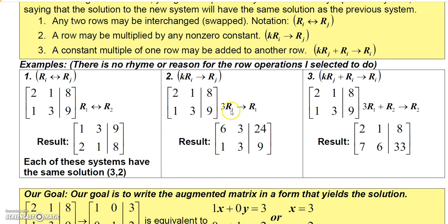You can also multiply any row by a constant. For example, multiply row 1 by 3 and replace row 1 with the result: 3 times 2 is 6, 3 times 1 is 3, 3 times 8 is 24. The new first row becomes 6, 3 | 24. Again, the solution to this system would still be the same — x = 3, y = 2.